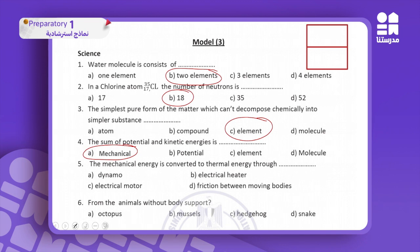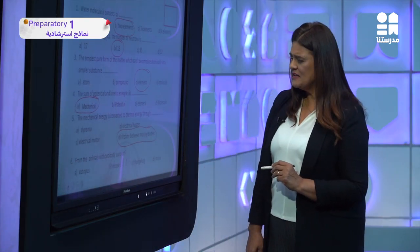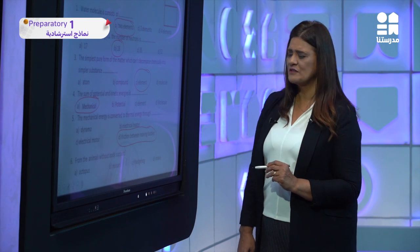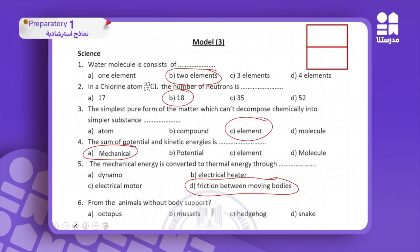It is friction between moving bodies. From the animals without body support — meaning the muscles — of course it is the opposite: without body support, so the answer is the octopus.